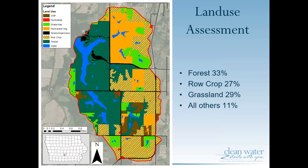Land use for the Lake Akwabi watershed is pretty evenly distributed between forest land, row crop, and grassland. Forest comprises 33 percent of the land use, row crop is at 27 percent, and grassland is 29 percent. Grassland could include alfalfa, hay, and generally non-pasture land. As you can see, it's a fairly even distribution between the three.